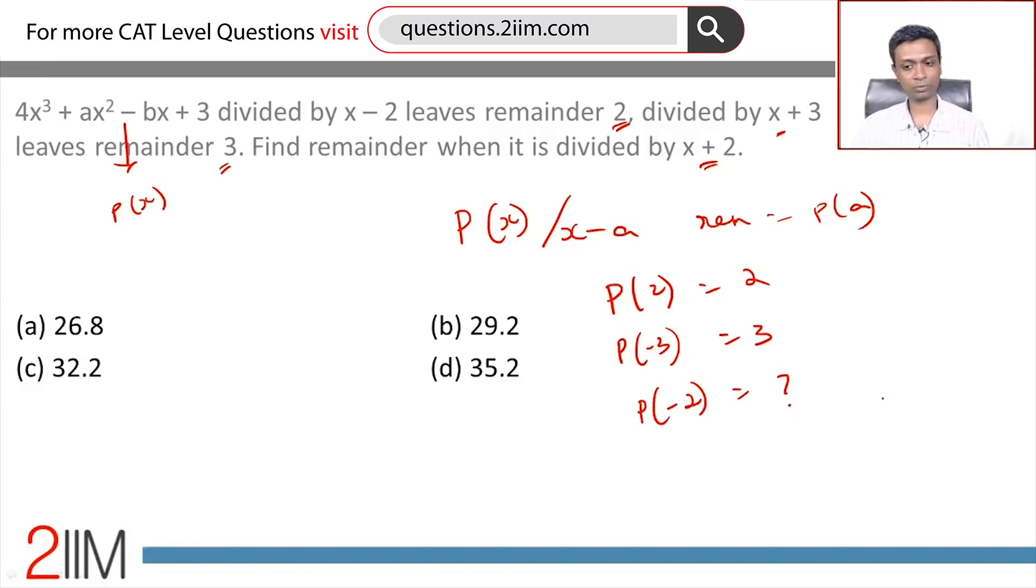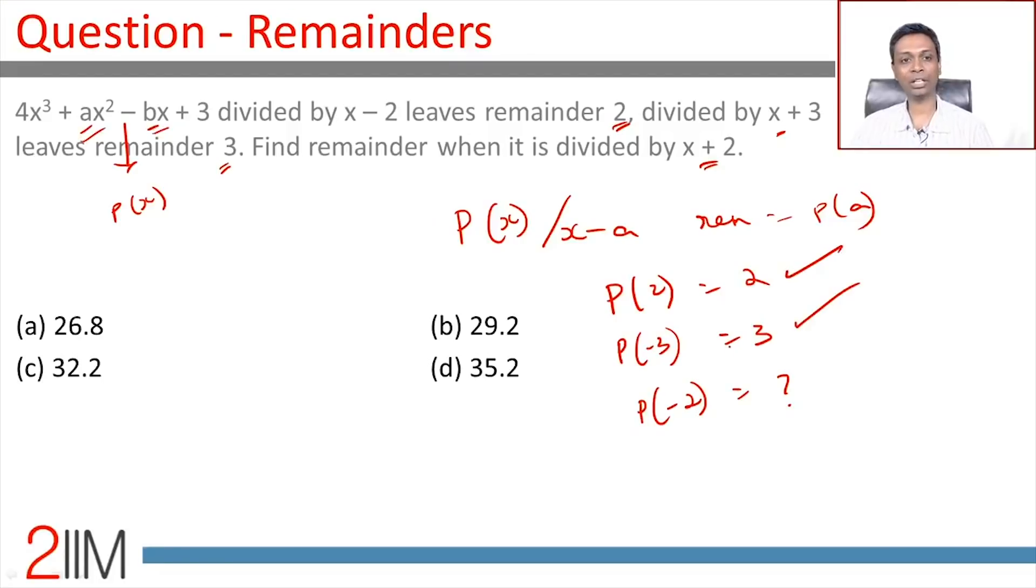Very simple question. Use these two to get equations in a and b, find a and b, plug them together and you can find p(-2).